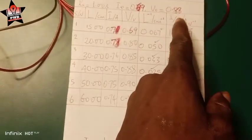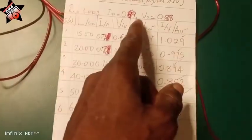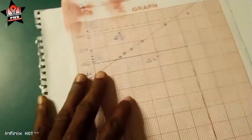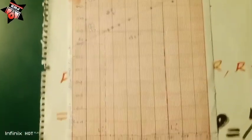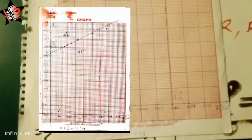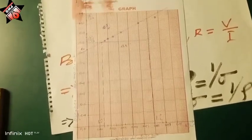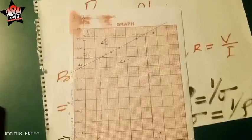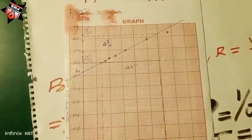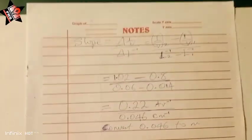I plotted the graph of I/V against L⁻¹ (inverse of length) and this is what I got. The graph had an intercept on the vertical axis because the trend was a consistent decrease. Whenever you have a decrease-decrease or increase-increase trend, you may get this type of graph from left to right. I calculated the slope and this was the result.